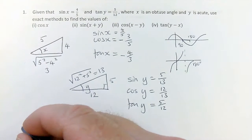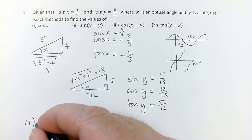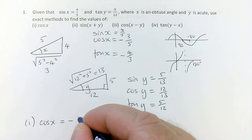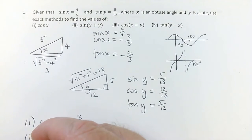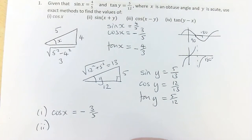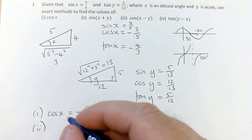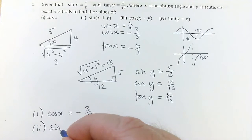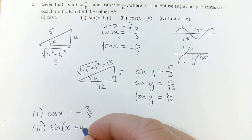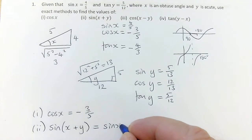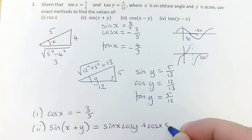But number one, cos y, sorry, cos x. Cos x, I've already done cos x equals minus 3 fifths. And then for part two, I've got sin of x plus y. Well, my formula book tells me that sin of a plus b is sin of a cos of b plus cos of a sin of b. So for x and y, it tells me that this is sin x cos y plus cos x sin y.